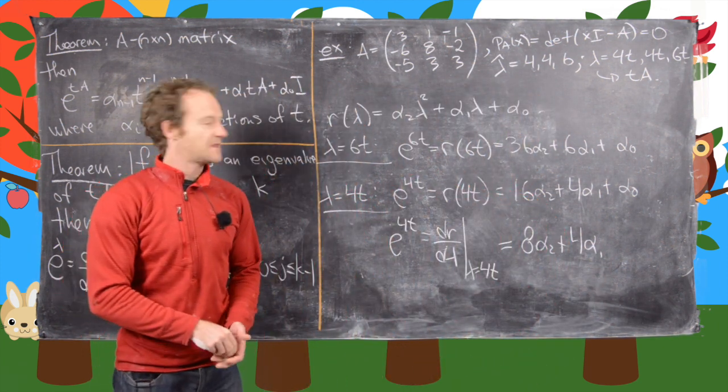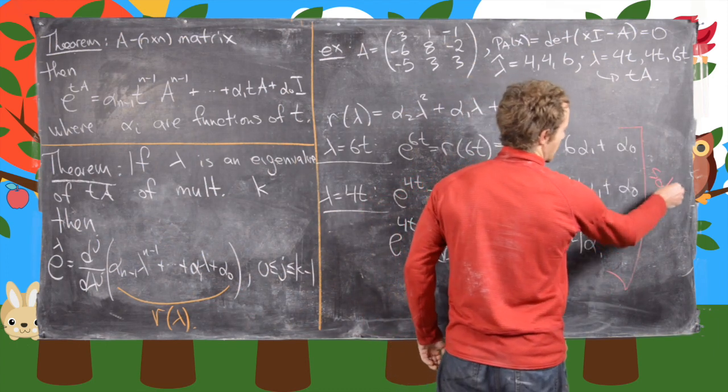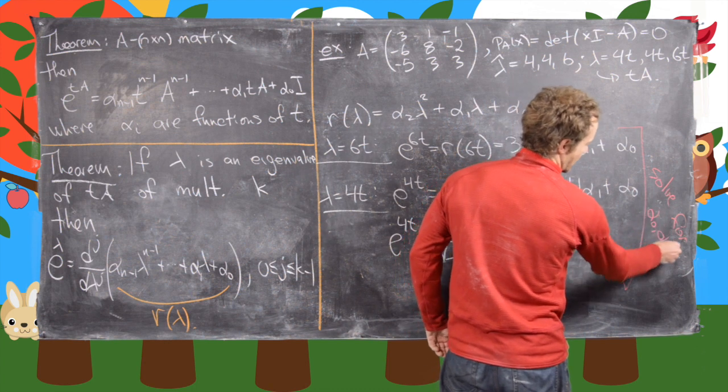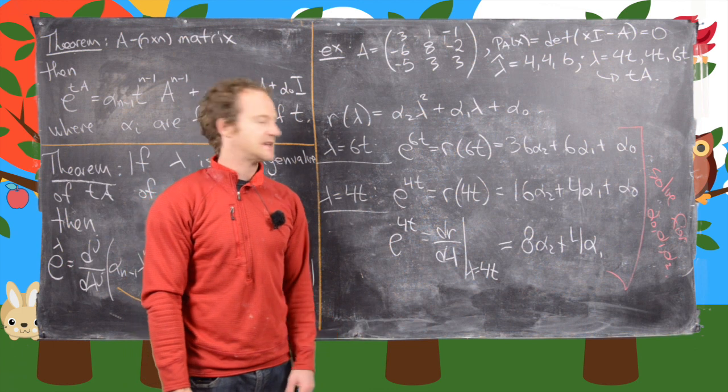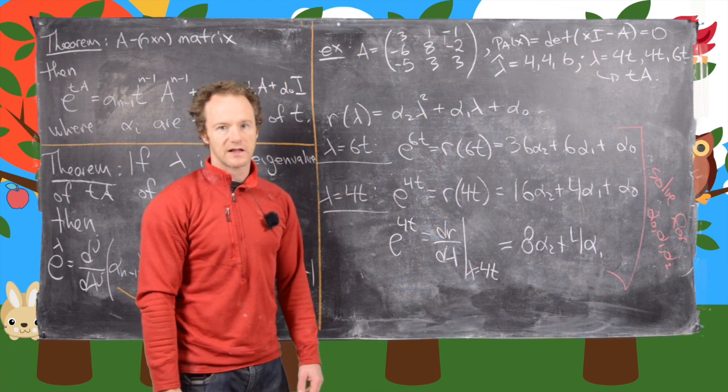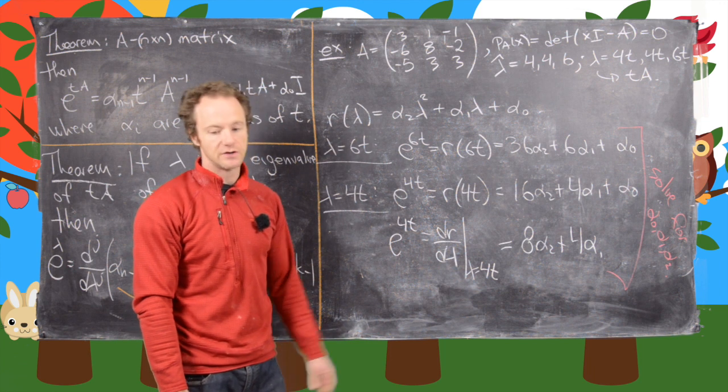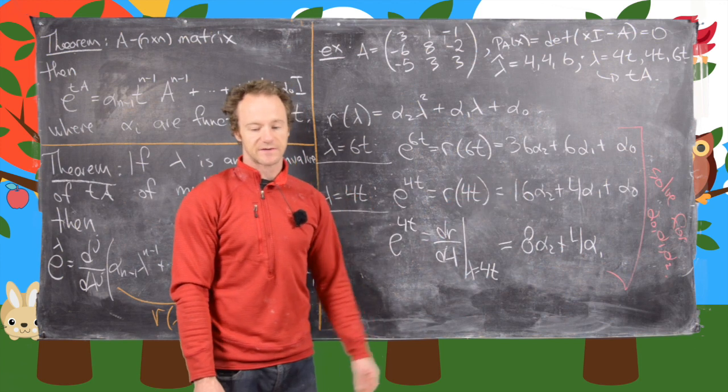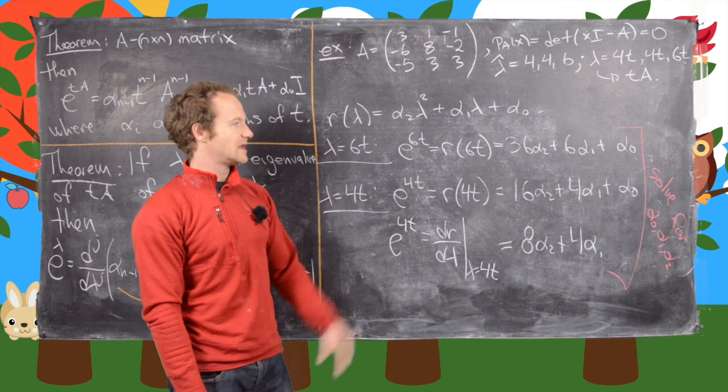Great. So what this gives us is some system of equations which we want to solve for alpha_0, alpha_1, and alpha_2. And so this should be fairly easy—it's an elementary problem in linear algebra to solve the system of equations for alpha_0, alpha_1, and alpha_2. So again, I'll skip that, but I will say what you'll do is take those solutions for alpha_1, alpha_2, and alpha_0, and plug them into